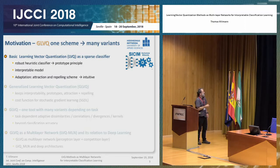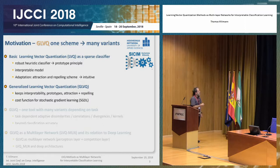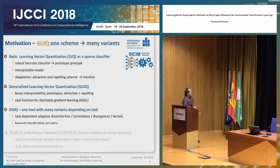This is basically the learning vector quantization as a sparse classifier as introduced by Kohonen. Then I will go to the generalized variant, which introduces a cost function for stochastic gradient descent learning, but keeps interpretability as introduced by Kohonen.